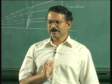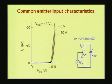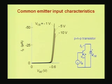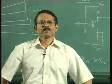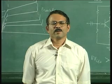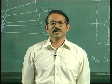We must be aware of the order of the currents and voltages involved. The magnitude of VBE is about 0.6 volts — VBE is negative because it is a PNP transistor. Around 0.6 volts the current starts rising as it happens in any diode, and the order of the base current is in tens of microamps. With this we have completed the DC characteristics of the PNP transistor.